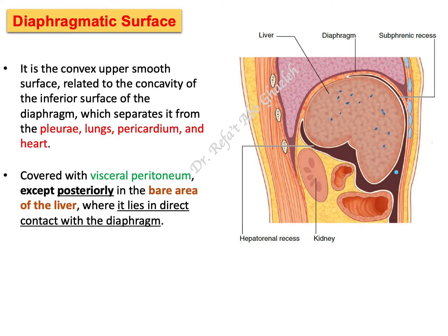Quickly, the anterior part and the superior part of the liver is located under the diaphragm, and apart from the posterior part, these parts are known as the diaphragmatic surface of the liver. Now, what about the visceral surface? From its name, 'visceral' means it faces different visceral organs and structures.